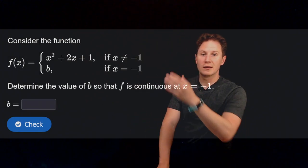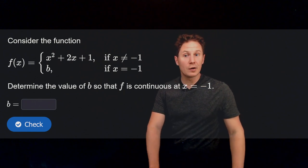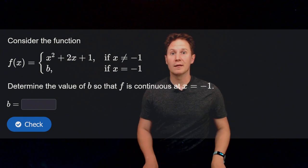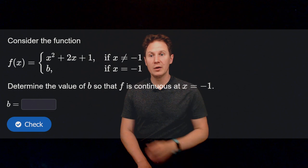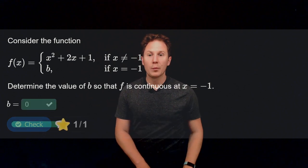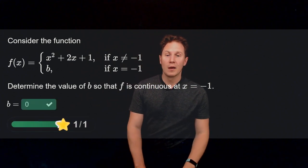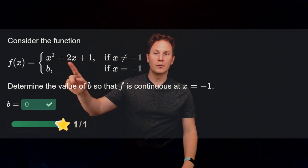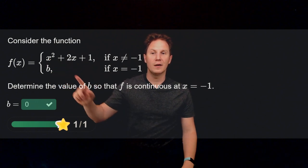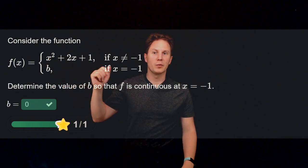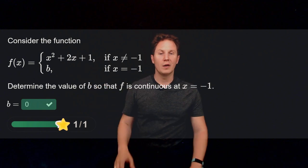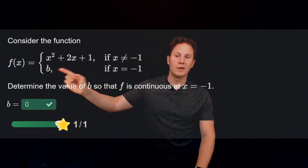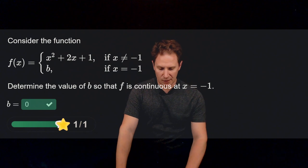Consider the function f defined in a piecewise way and determine the value of b so that the function is continuous at x equals negative one. The answer is zero. You get this by taking the limit as x approaches negative one, computing negative one squared plus two times negative one plus one, which equals zero, and that must equal the value of the function at x equals negative one. So b needs to be zero.